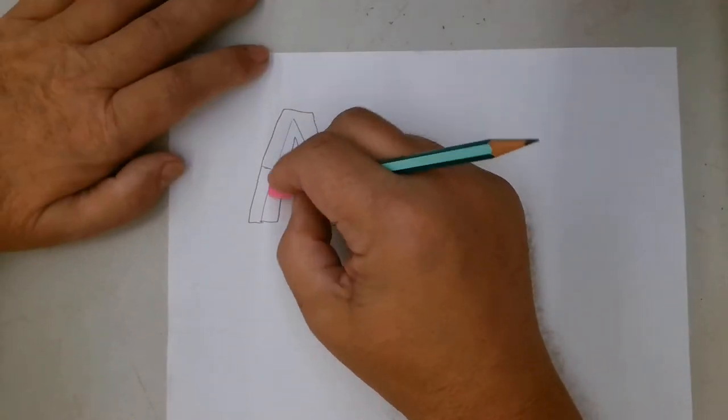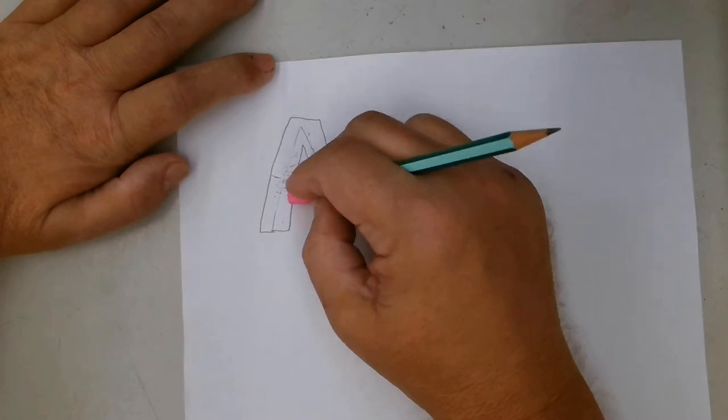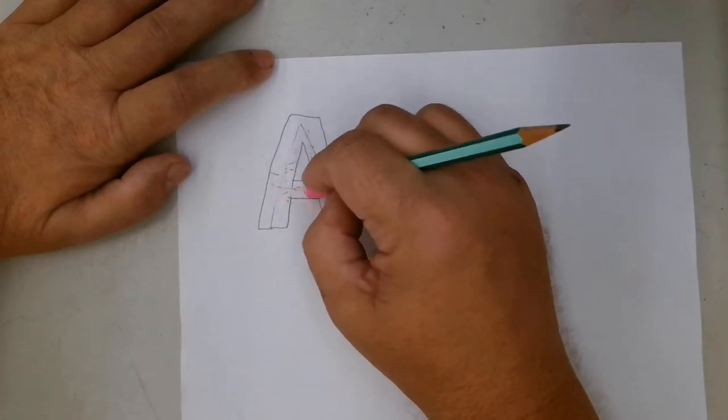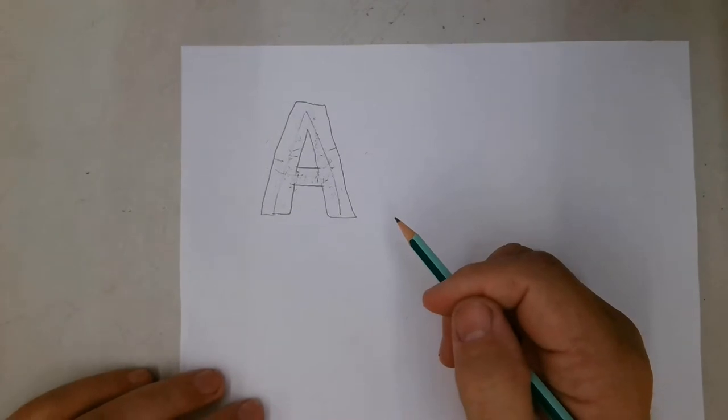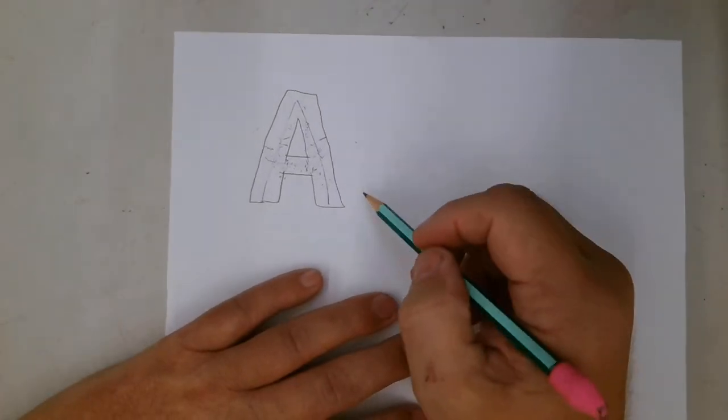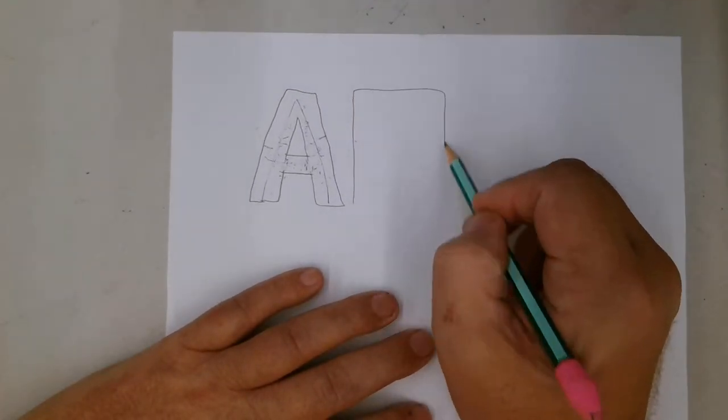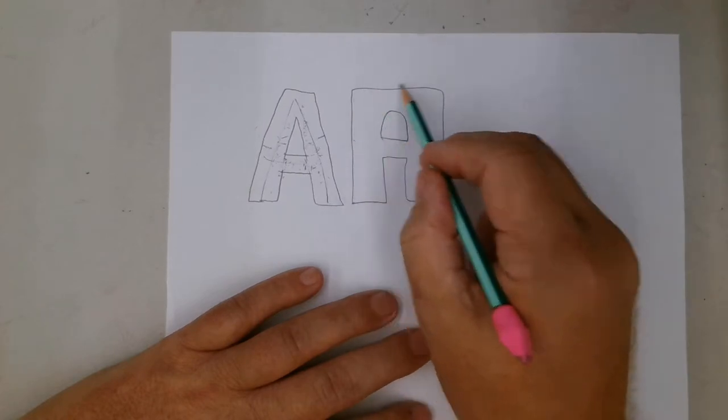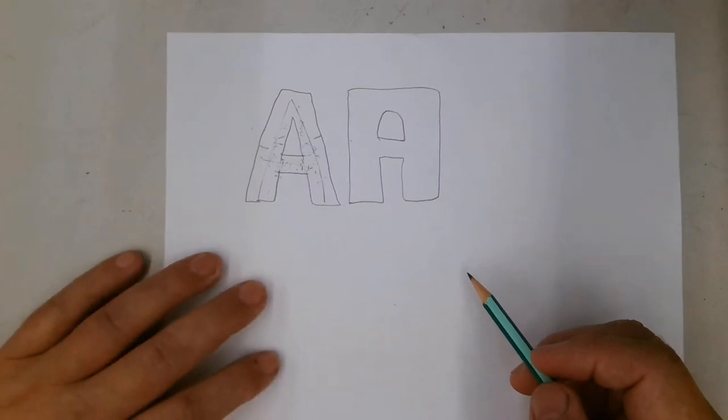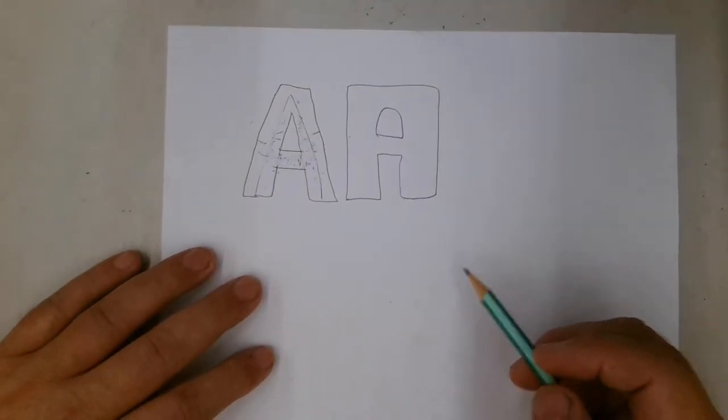If we erase all of that that we didn't need at the end, now our stick letters turn into a block letter. Sometimes the letter A might be done this way, so it takes up even more of the rectangle that we're using for our letters.